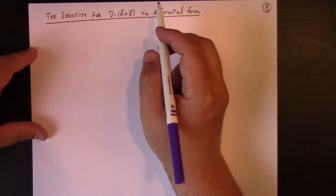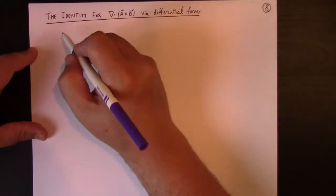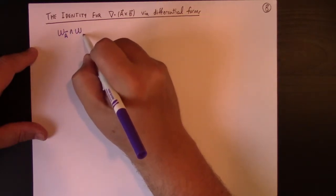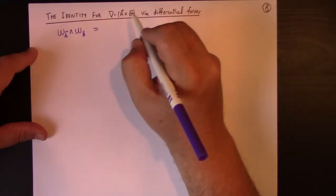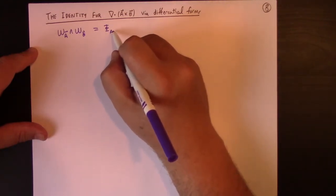So to do that, I'm going to look at the fact that we of course have omega A wedge omega B equal to the flux form of A cross B.